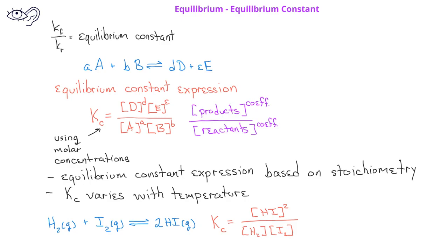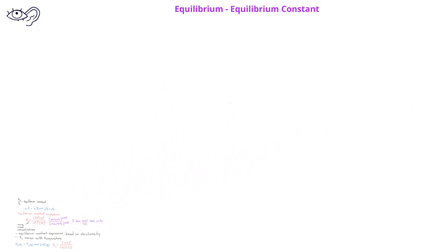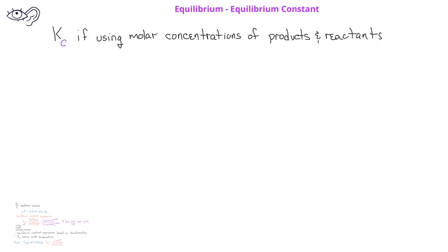One final important note is that equilibrium constants are typically written without units. In the previous equilibrium constant expression, we used a subscript C indicating that we would be using the molar concentrations of the products and the reactants.